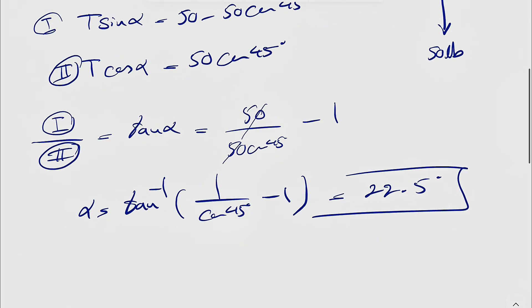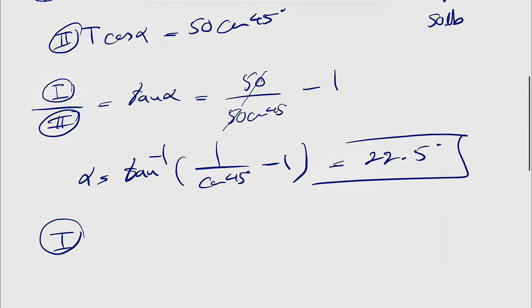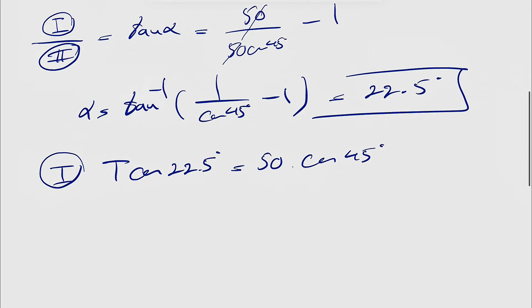And finding the T is pretty easy after this. We can just pick one of the equations, let's just go with the first one. So T sine of 22.5 is equal to, actually going to go with the second one because it's easier, T cosine of 22.5 is equal to 50 cosine of 45 degrees.